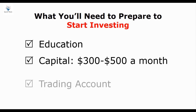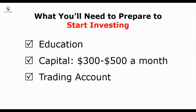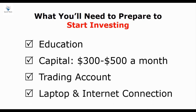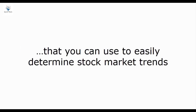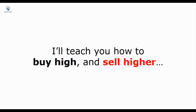Next, you'll need a trading account. You can open two trading accounts — one from TD Ameritrade and one from Interactive Brokers — so you can take advantage of the low trading fee from Interactive Brokers and have free access to the professional trading software from TD Ameritrade. And finally, you'll need a laptop with an internet connection to start buying and selling stocks, and make sure you avoid making a trade when you're on mobile — only use mobile apps for monitoring your stock's performance and reading market news. Now I'm going to share with you my favorite trading strategy that you can use to easily determine stock market trends. I'll teach you how to buy high and sell higher. We'll buy a stock when it's in an uptrend, and we'll consider selling it at the end of the uptrend.